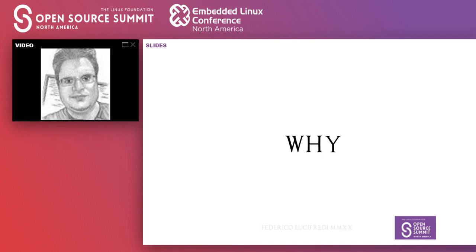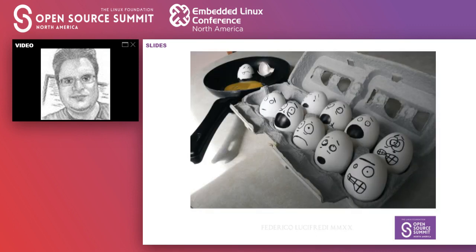You cannot execute if decisions are not prompt, mostly correct, and accepted by the team — and that's why we're here. Decisions are necessary because of how wonderfully unconstrained software is. Until some key decisions are made, you could be building voting via blockchain or a self-driving car with the same team.